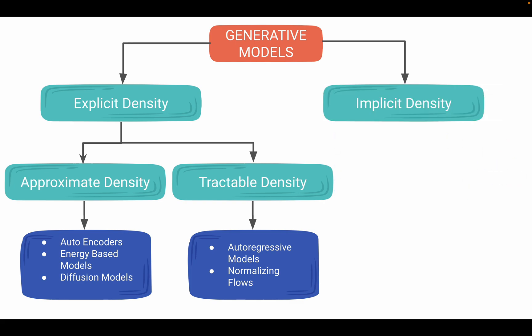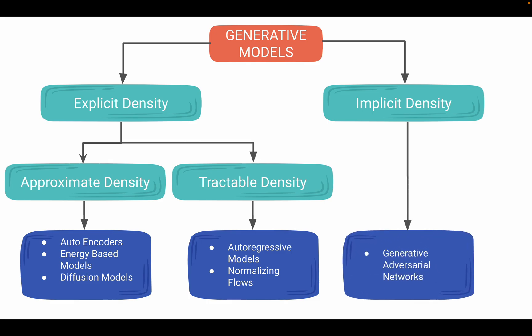The best known example in implicit density models is generative adversarial network.